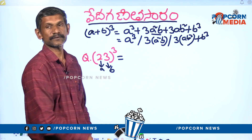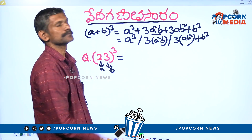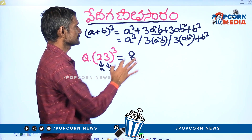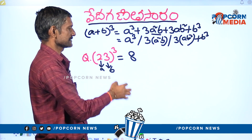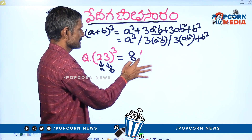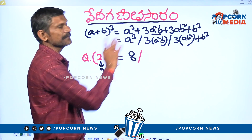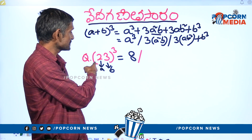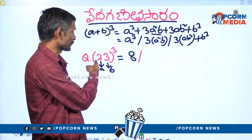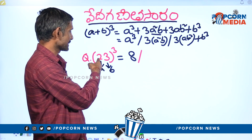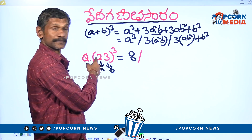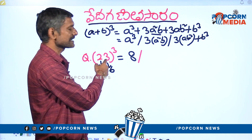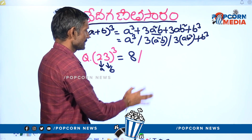A keep is 2. So a cube: 2 times 2 is 4, 4 times 2 is 8. Then we will get 3a squared b. A squared is 2 times 2 is 4, then 4 times 3 is 12. Directly, you get 12.